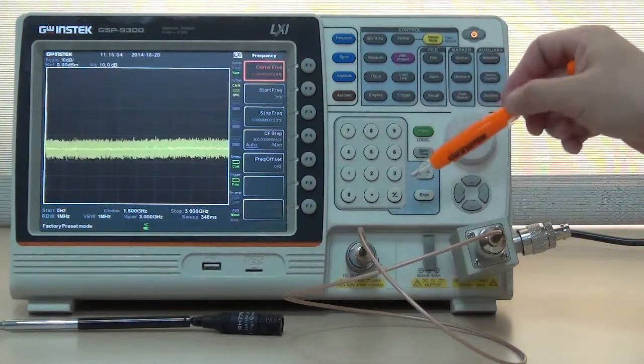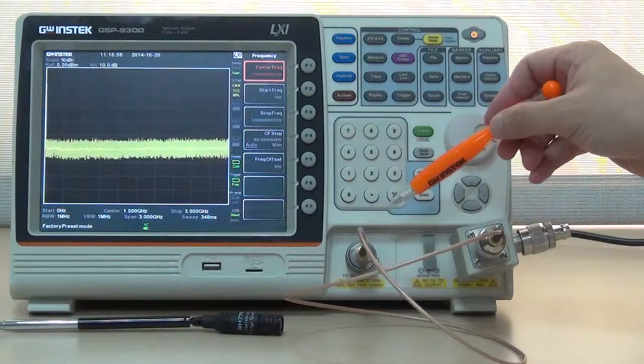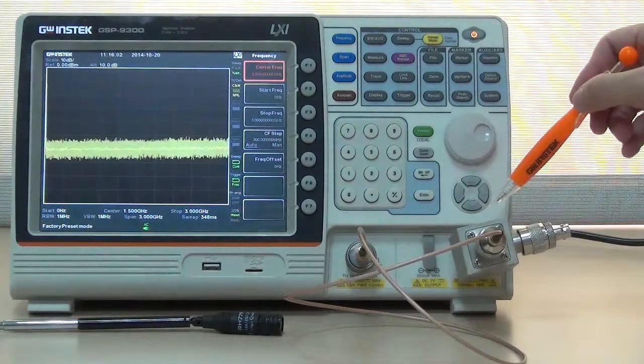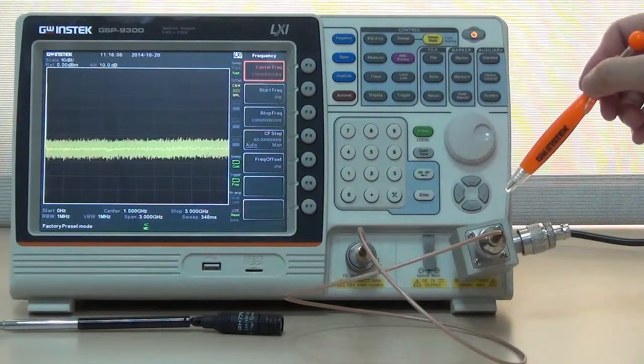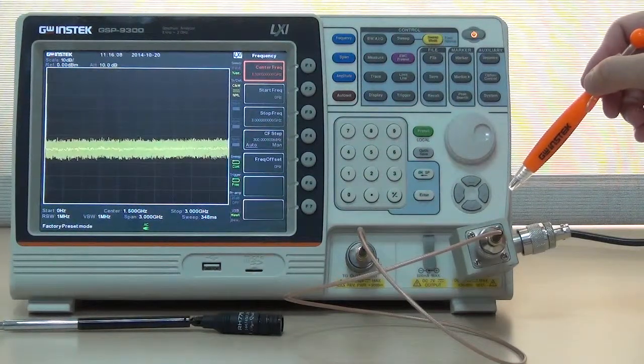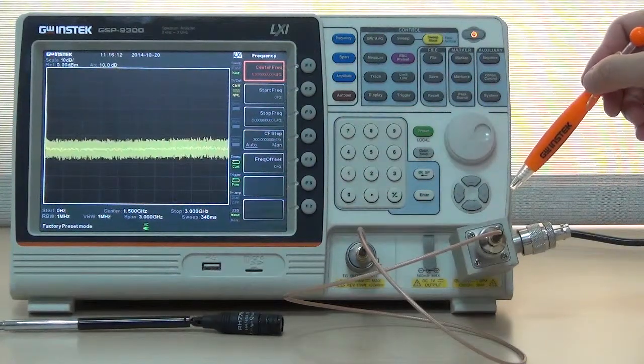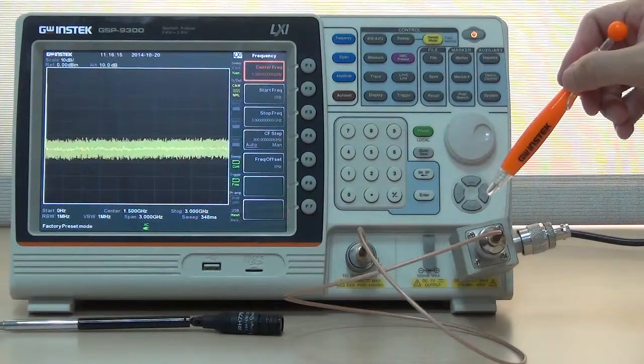Connect SMA adapter and RF cable with tracking generator output and connect RF input of GSP9300 with return loss breach and SMA adapter. Next, connect SMA RF cable from the tracking generator output with the source port of return loss breach.